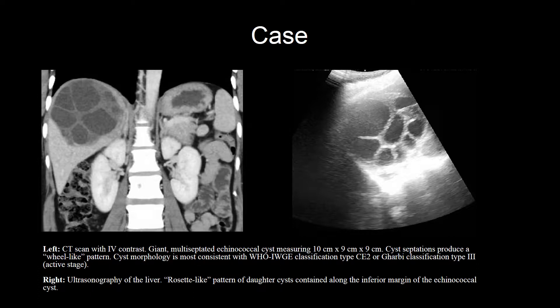On the left, a CT scan with IV contrast demonstrates a giant, multiseptated echinococcal cyst measuring 10 by 9 by 9 centimeters. Cyst septations produce a wheel-like pattern. Cyst morphology is most consistent with Hu-IWGE classification type CE2, or Garby classification type 3. This is an active stage cyst. On the right, an ultrasound of the liver shows a rosette-like pattern of daughter cysts contained along the inferior margin of the echinococcal cyst.